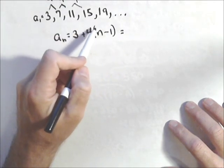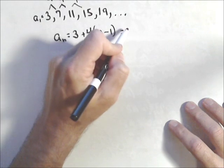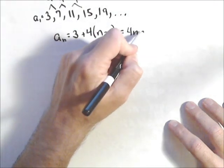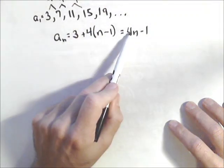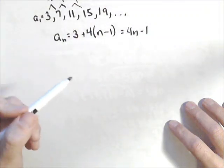We can multiply this out and distribute if we want, and we'd have 4n minus 1. And we can see the third term is 11. Well, if we plug 3 in, we get 12 minus 1, which is 11.